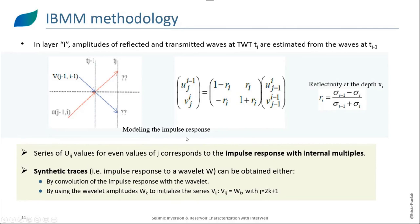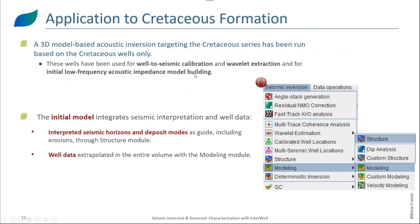There are two ways for calculating the synthetic traces: either by convolution of the impulse response with the wavelet, or by using directly the wavelet amplitudes to initialize the amplitudes of the transmitted waves. We have applied this process to the Cretaceous formation. We performed a 3D acoustic model-based inversion targeting the Cretaceous series, run based only on the Cretaceous wells, using those wells for well-to-seismic calibration, wavelet extraction, and constructing the initial low-frequency model. This initial low-frequency model integrates the seismic interpretation with seismic horizons and the definition of deposition modes as guides for extrapolating well data in the entire volume, yielding an initial volume of acoustic impedance used as input for the seismic inversion.